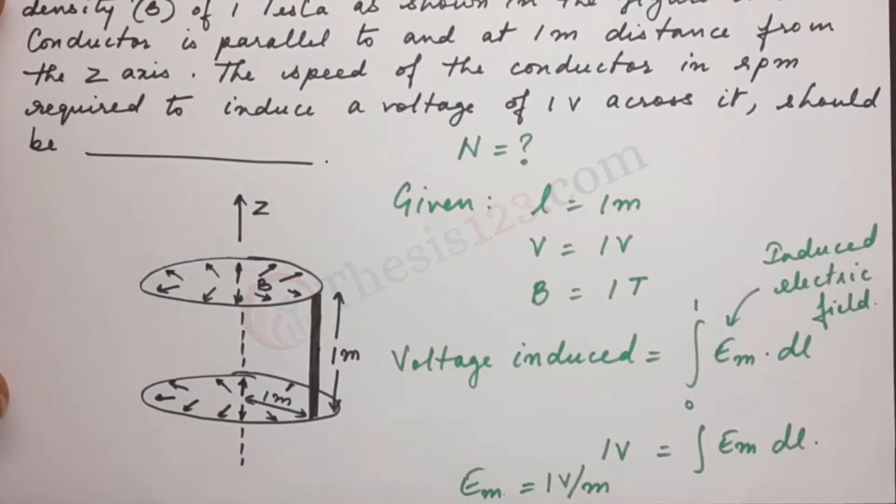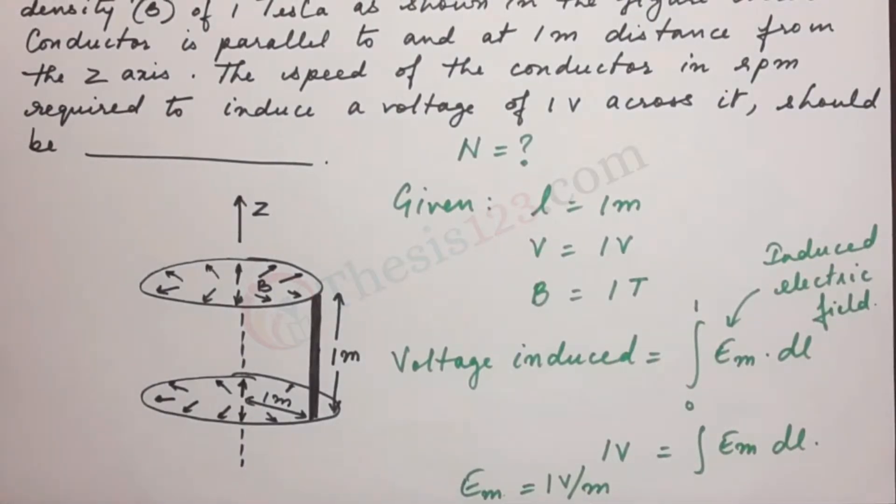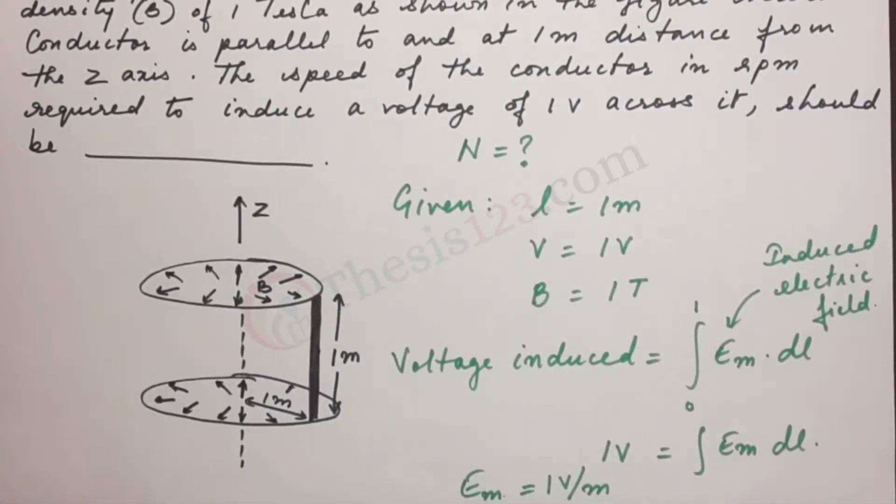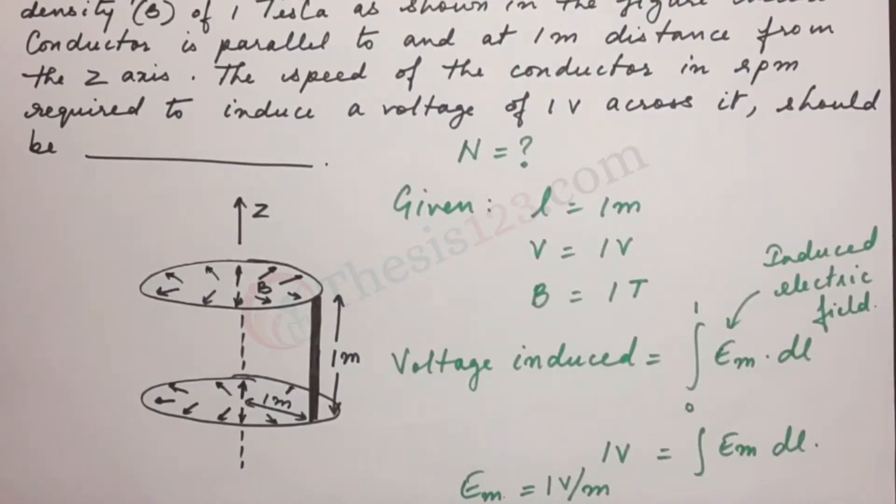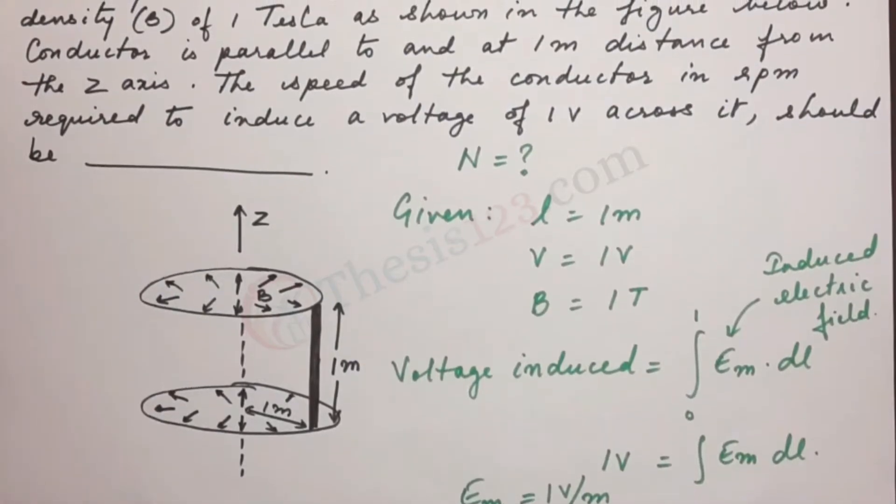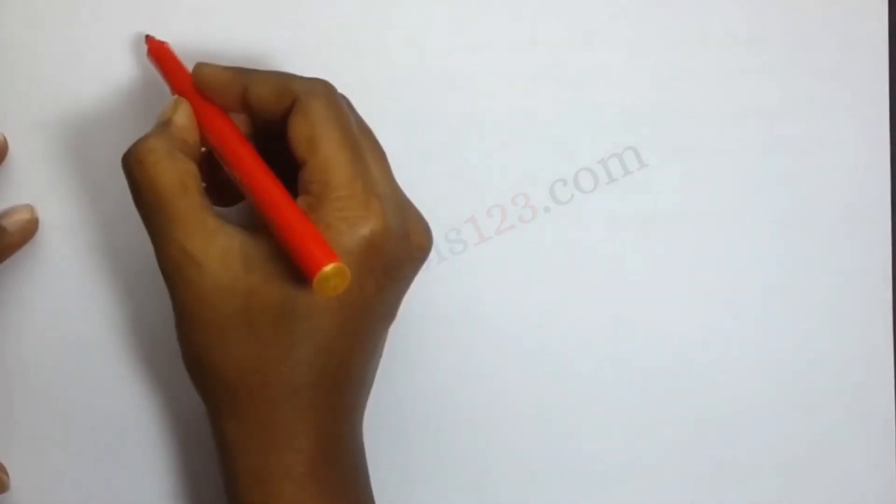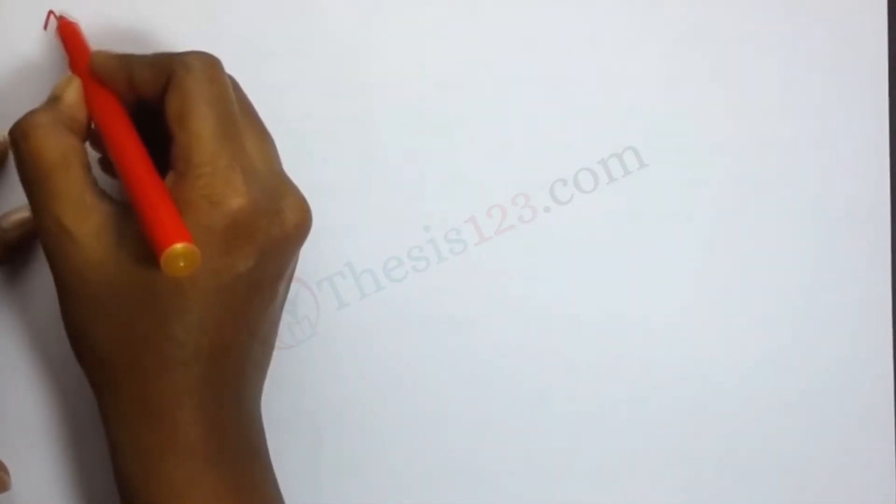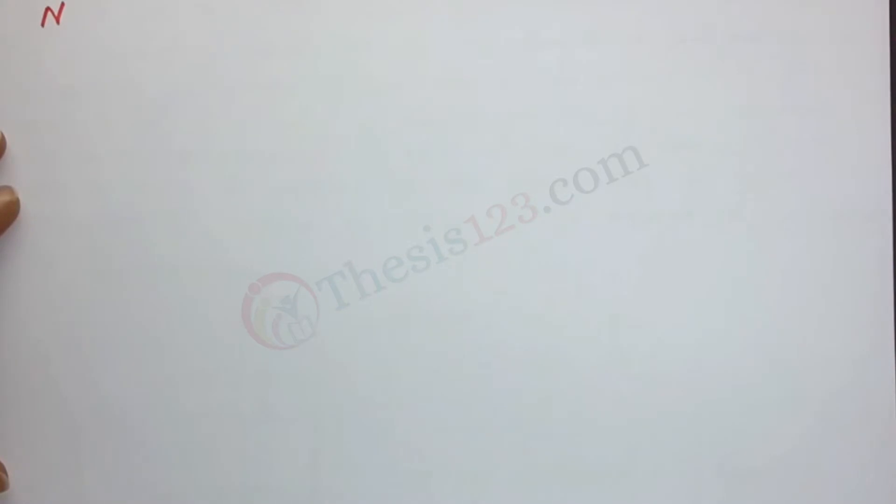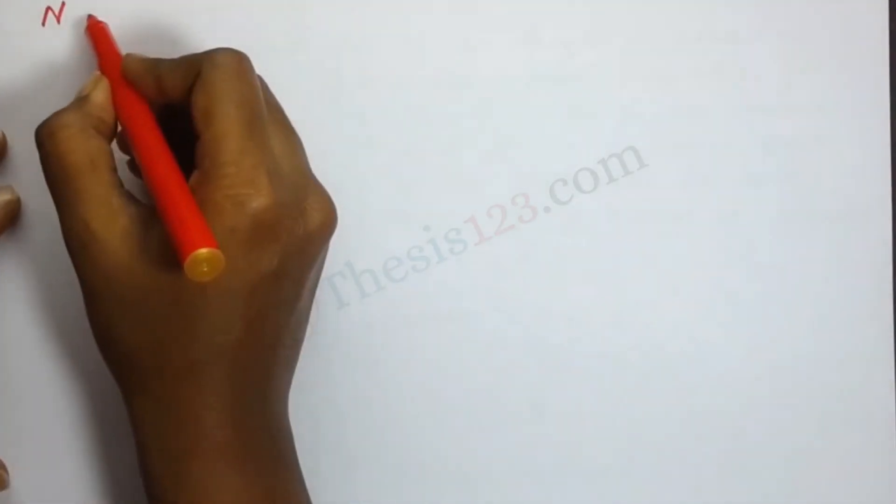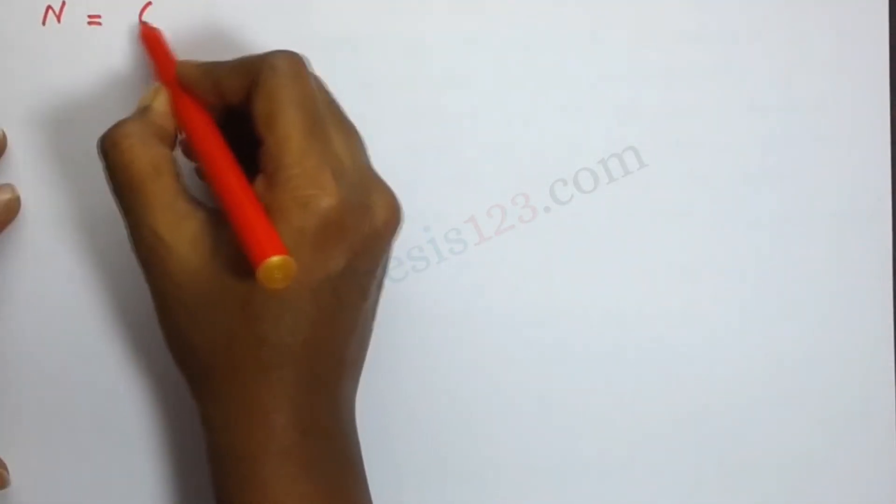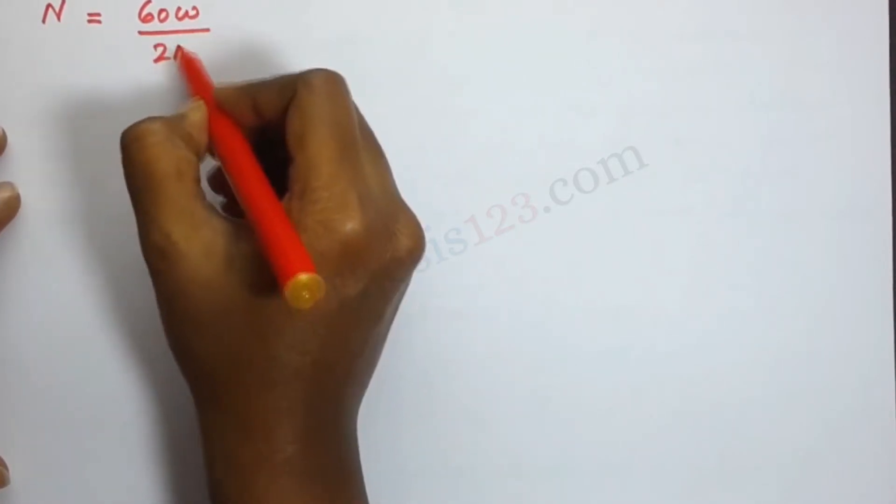So that's our E_m. Now E_m in terms of velocity - we will have to write it in terms of velocity. Now we need the speed as N, and N in terms of angular velocity is 60 omega by 2 pi.